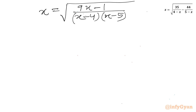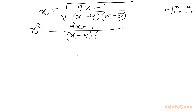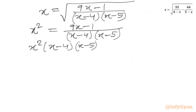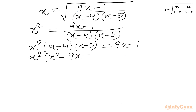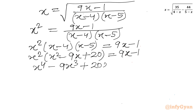Now I will consider squaring both sides, so x squared equals (9x minus 1) over [(x minus 4)(x minus 5)]. Cross-multiplying: x squared times (x minus 4)(x minus 5) equals 9x minus 1. Since (x minus 4)(x minus 5) equals x squared minus 9x plus 20, we expand to get x⁴ minus 9x³ plus 20x² minus 9x plus 1 equals 0.